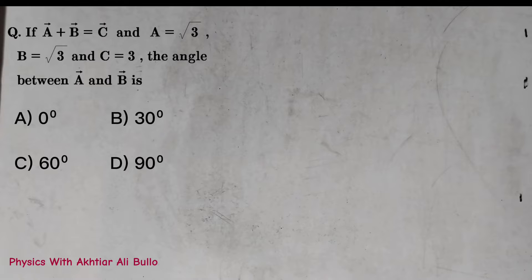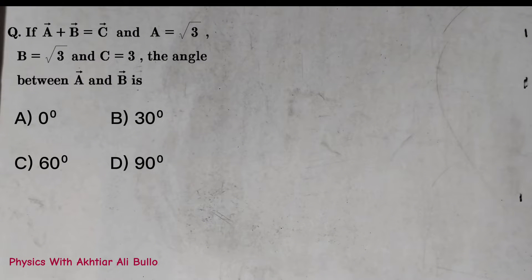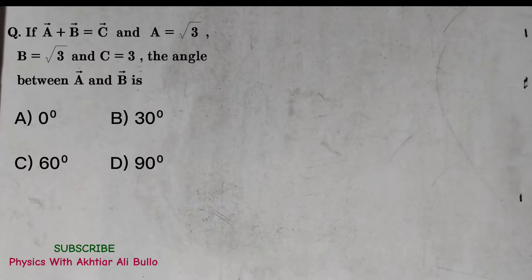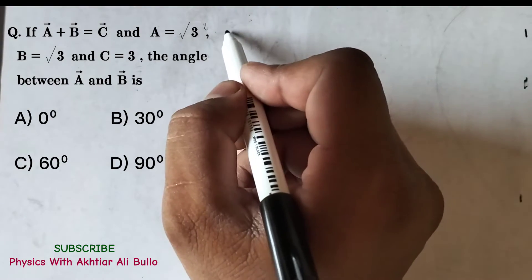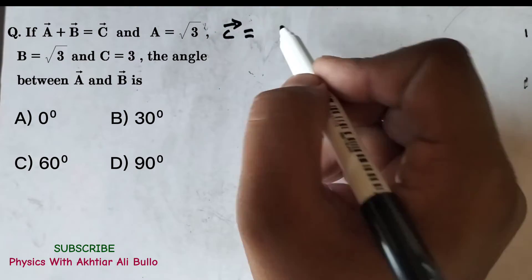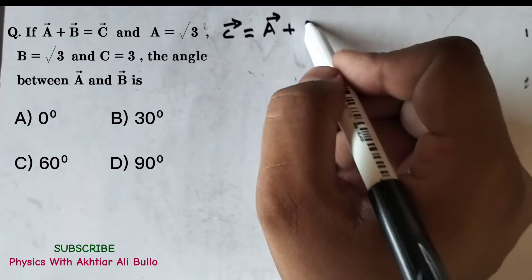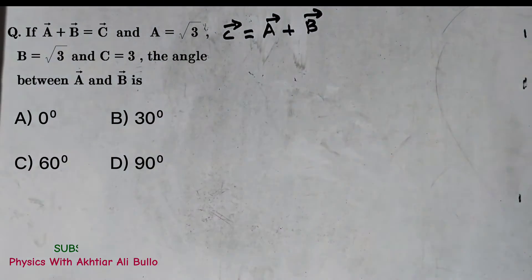The question is: if vector a plus vector b is equal to vector c, and the magnitude of a is √3, magnitude of b is √3, and magnitude of c is 3, the angle between a and b is: (a) 0°, (b) 30°, (c) 60°, (d) 90°. Since c vector equals a vector plus b vector.